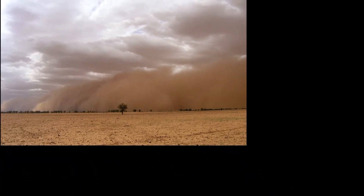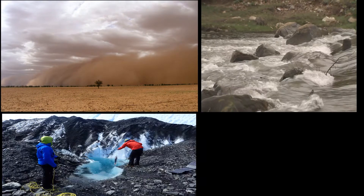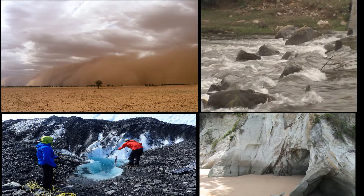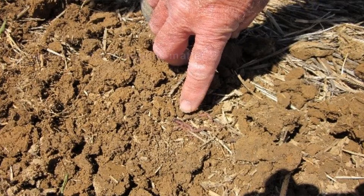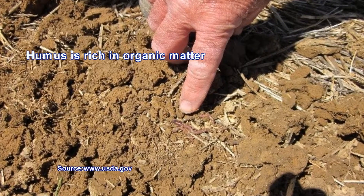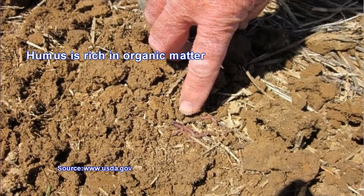Some soil is removed from the parent rock by wind, water, glaciers, waves, etc. In the soil, the top layer contains humus. Humus is the decaying material produced when bacteria cause the decay of dead plants and animals. Humus is normally dark colored and is important for the growth of plants.